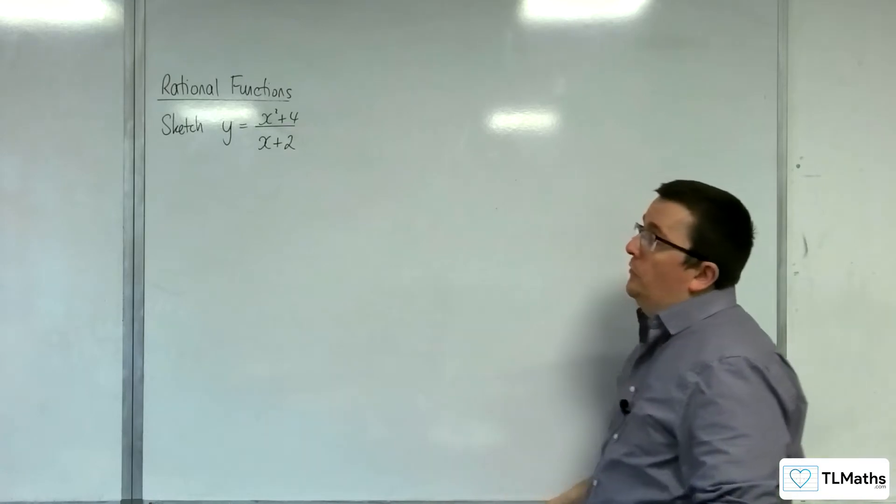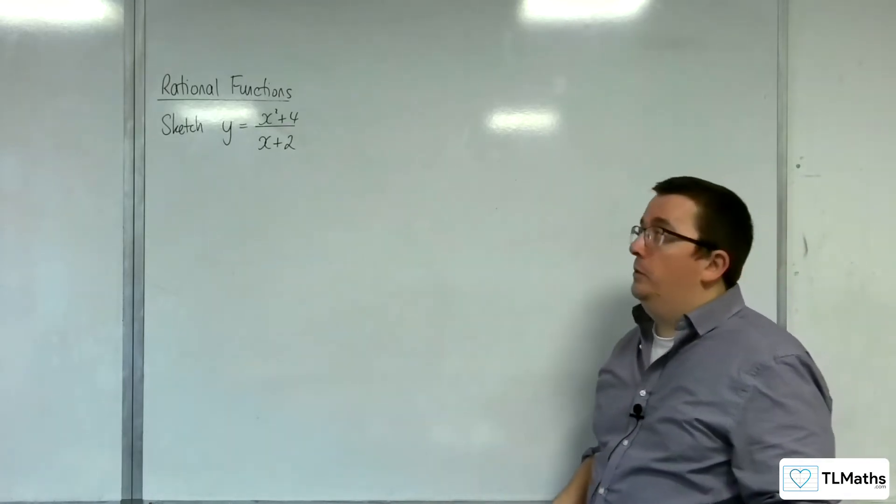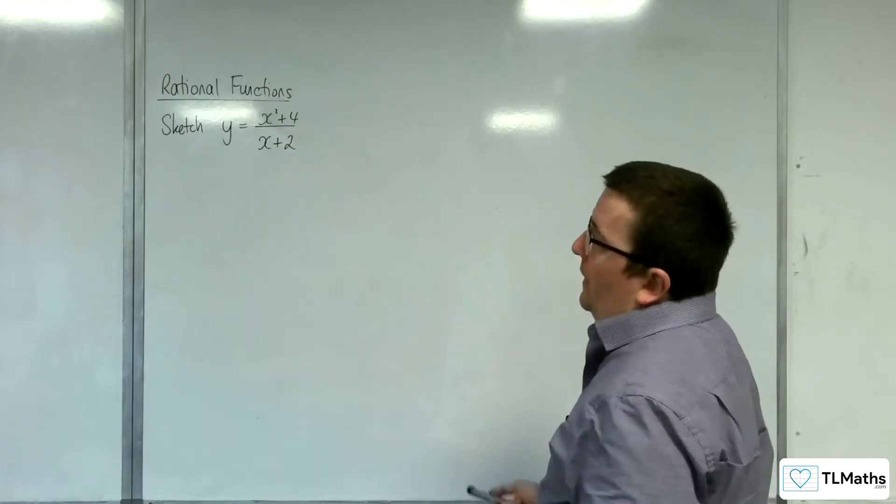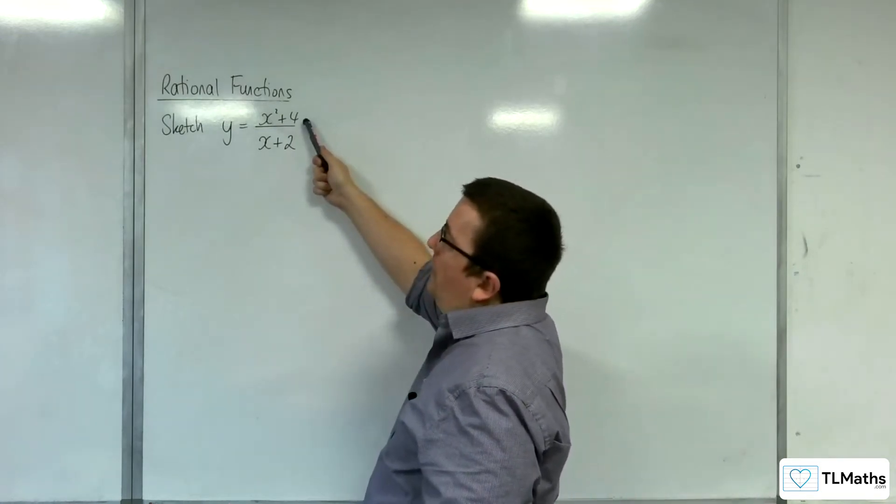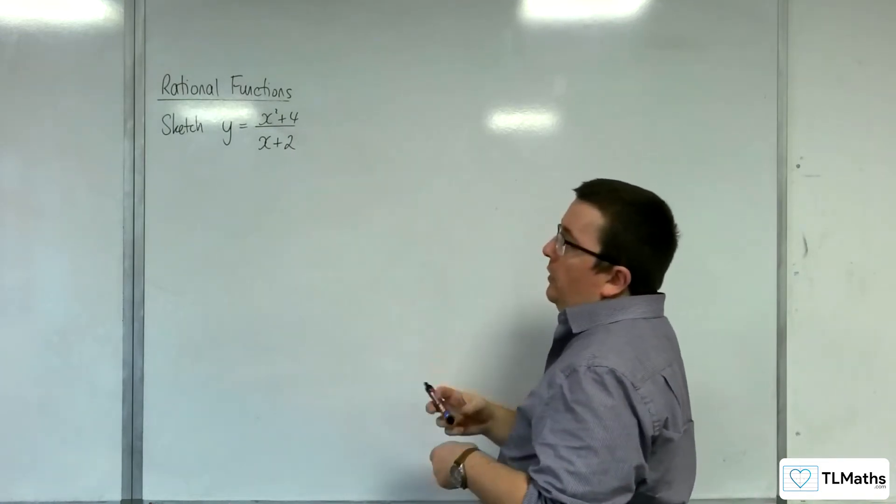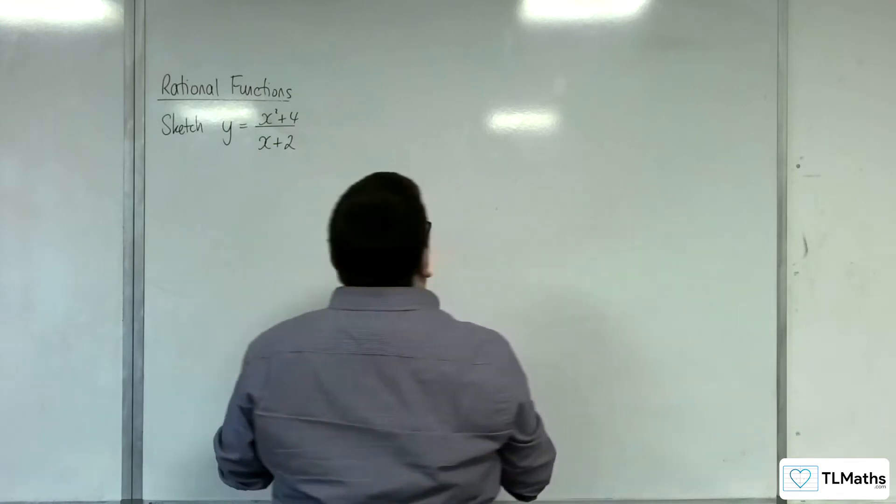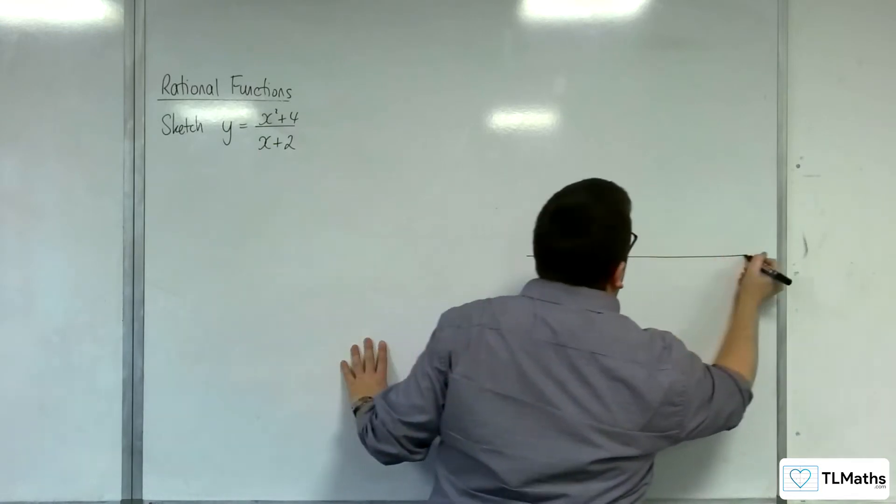In this video I'm going to be sketching y equals x squared plus 4 over x plus 2. Now the numerator doesn't factorize, that's greater than 0 for all real values of x, and so there's nothing I can really do to that expression. So I'm going to have to go straight in with the sketch.